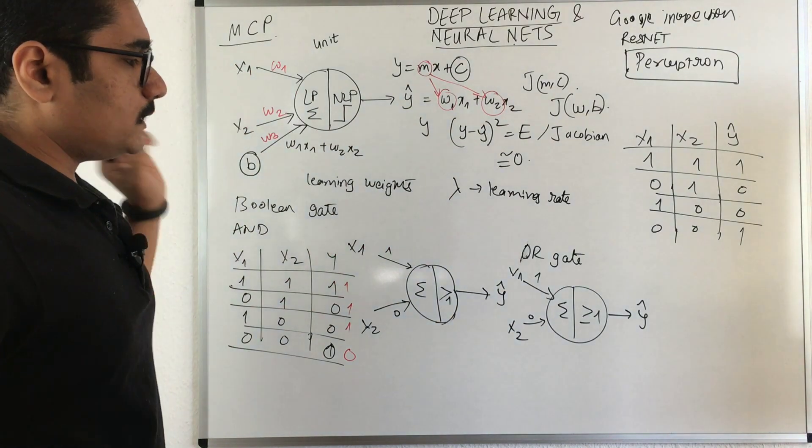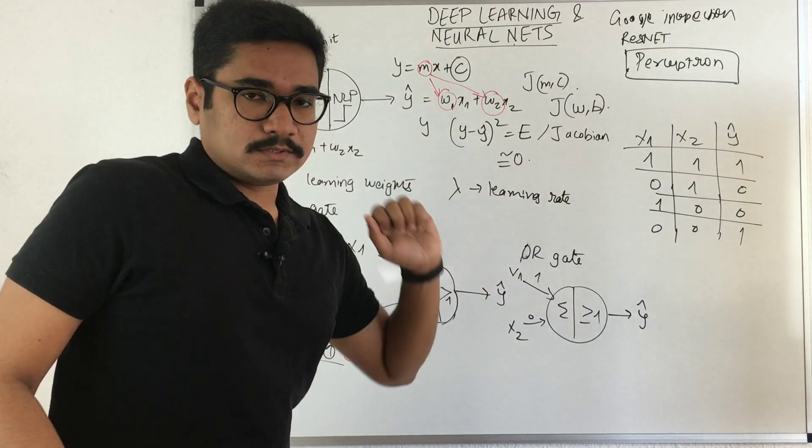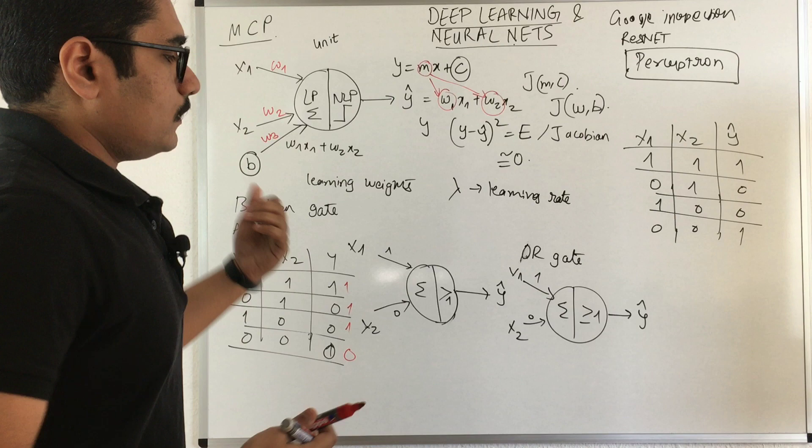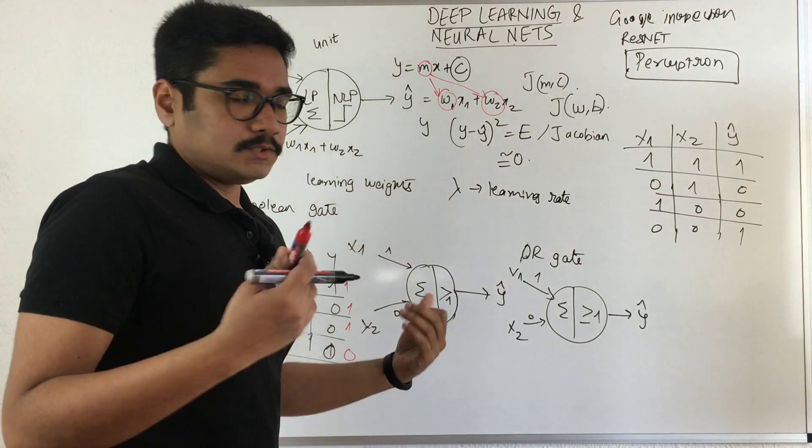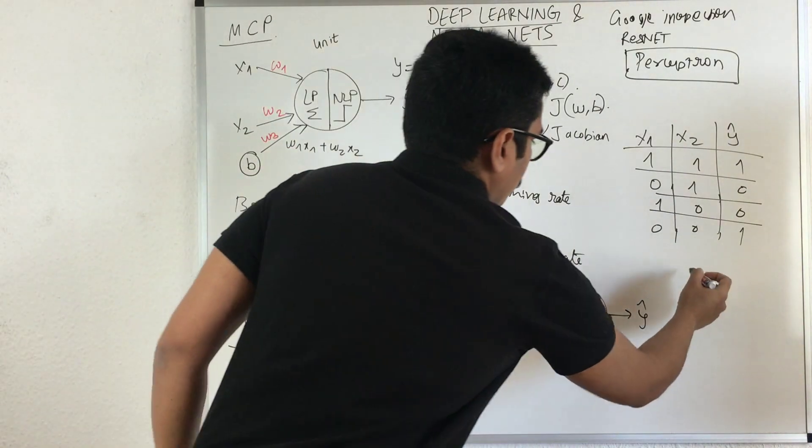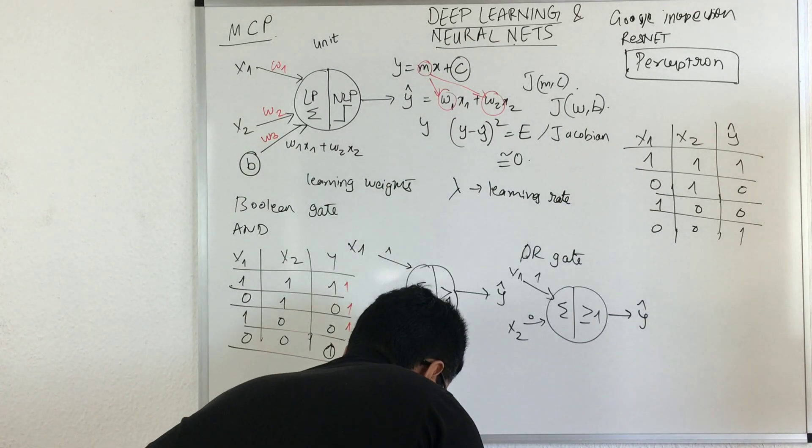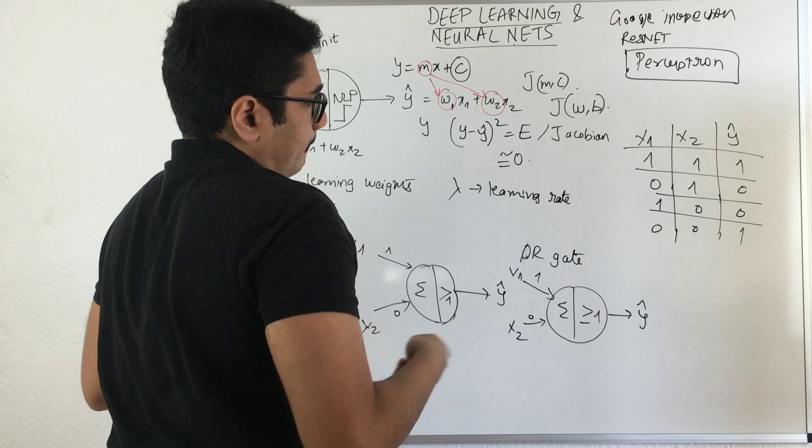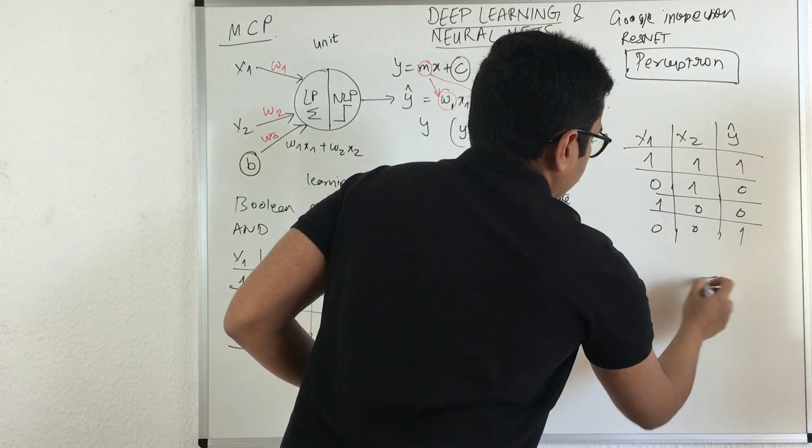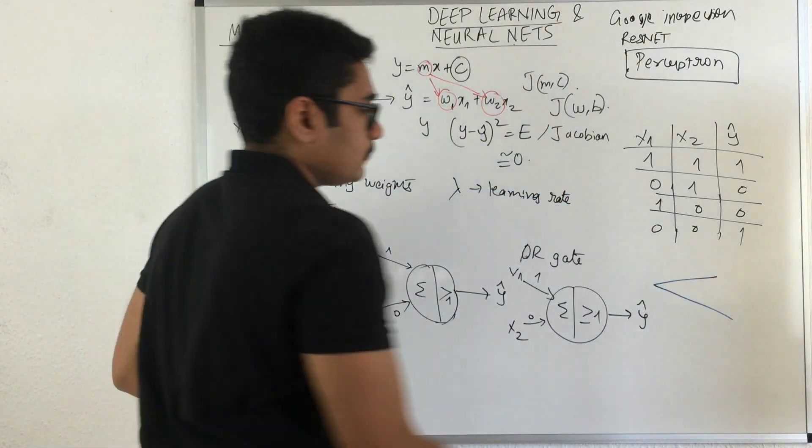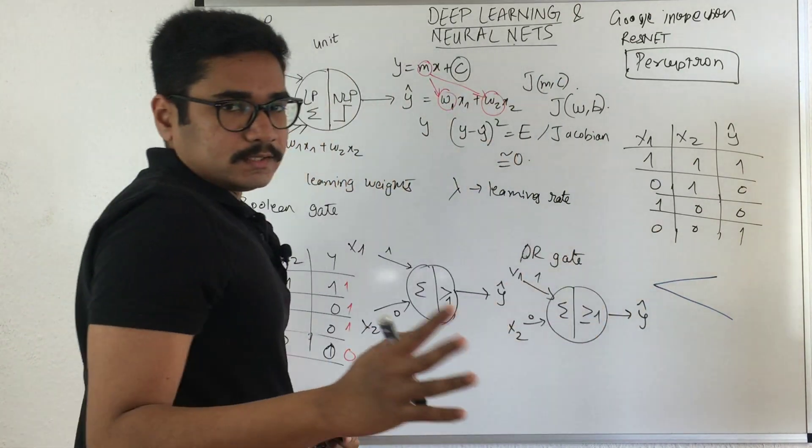This was the major challenge in the older days. To understand this geometrically, say you have two instances.